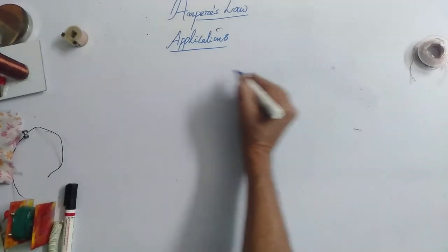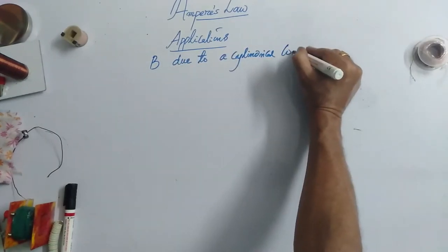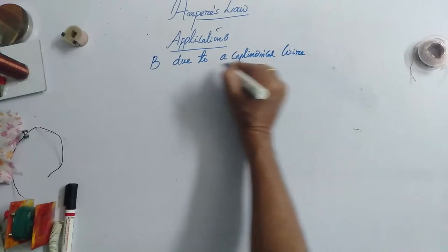Now let's talk about B due to Cylindrical Wire or Cylindrical Conductor. If the current is passing in this direction, then we will have to take the Amperian Loop. The Amperian Loop can be outside and inside.